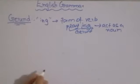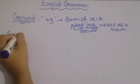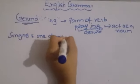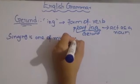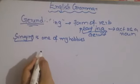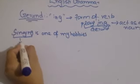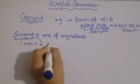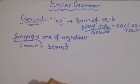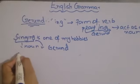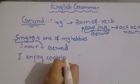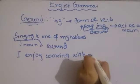Now let's take an example: 'Singing is one of my hobbies.' We can see that 'sing' is the first form of the verb. If we add -ing, we get 'singing', which is the Gerund. In this sentence, the underlined word acts as a noun, giving us a Gerund sentence.